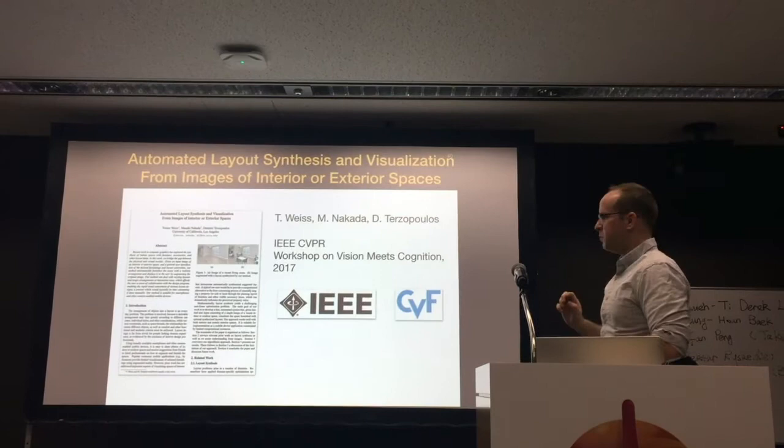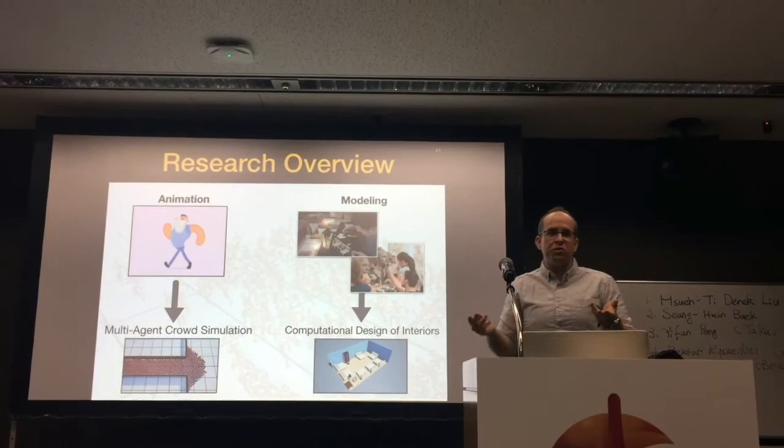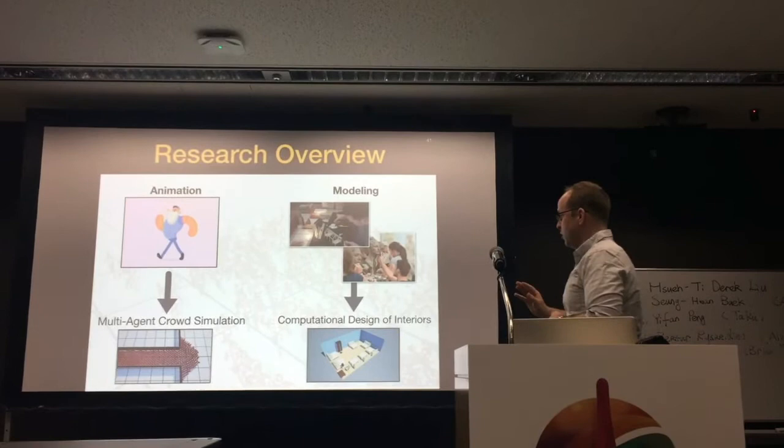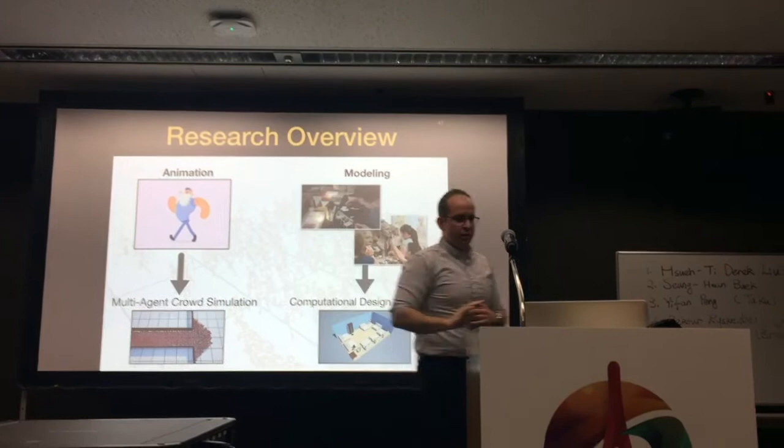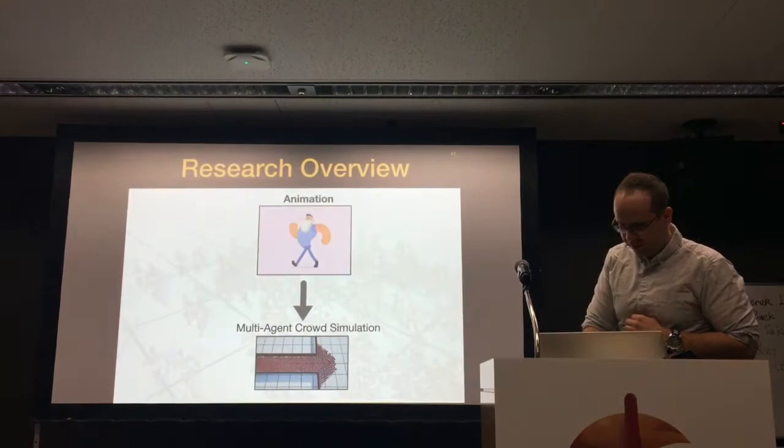We dealt with layouts, but the problem with layouts is there's no real way to understand if they're good or bad — it's very user-dependent and there are no clear metrics. However, this same machinery can be used for a different problem: crowd simulation. We do know good metrics on how crowds should move, and we know how to do it with this machinery. So let's first look at why we're interested in crowds at all.